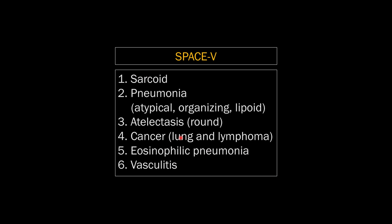I came up with this mnemonic SPACE V to cover the major causes of chronic consolidation — not a comprehensive list, but a pretty good one. S stands for sarcoid. P is pneumonia, with three kinds: atypical pneumonia, organizing pneumonia, and lipoid pneumonia. A stands for atelectasis, specifically round atelectasis. C is for cancer — both lung and lymphoma. E is for eosinophilic pneumonia. And V is for vasculitis.